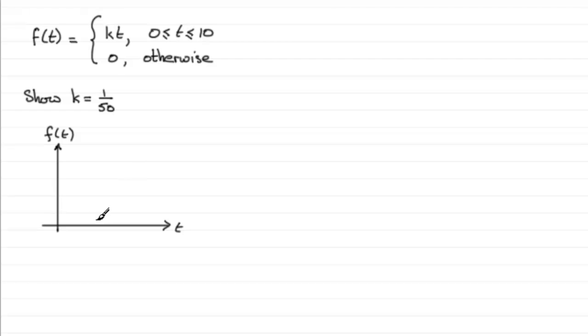We know that it goes between 0 and 10, and it's linear. We know that when t is 0, we get 0, and when t is 10, we get 10k. So we've got a graph looking something like this, and this value directly below here is going to be 10.